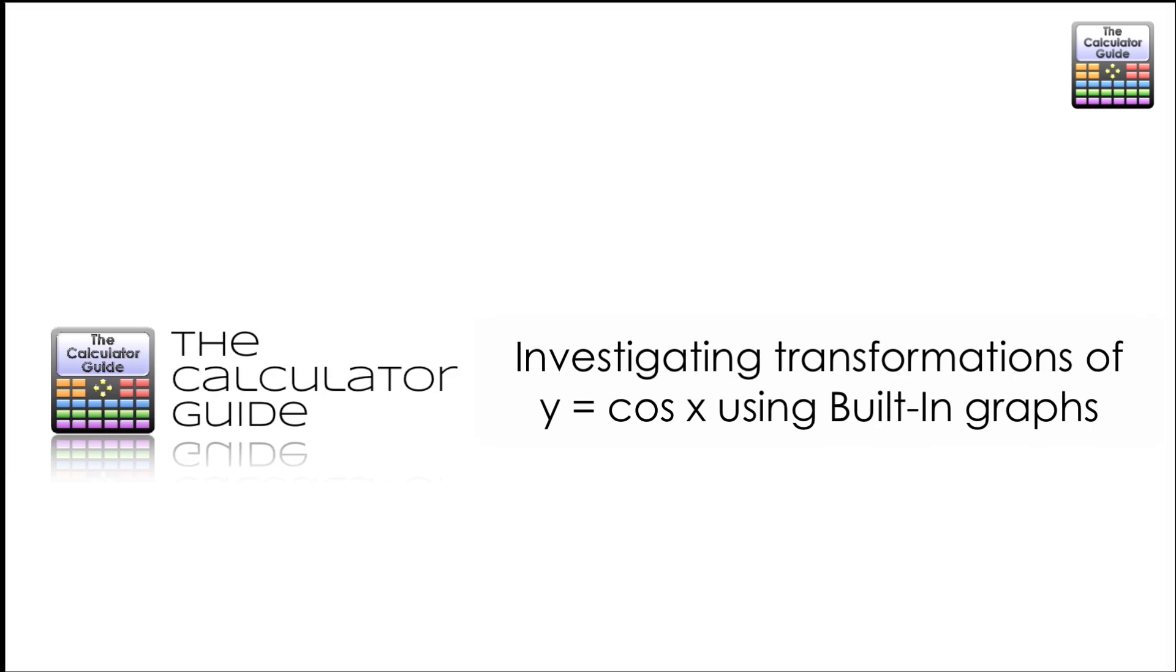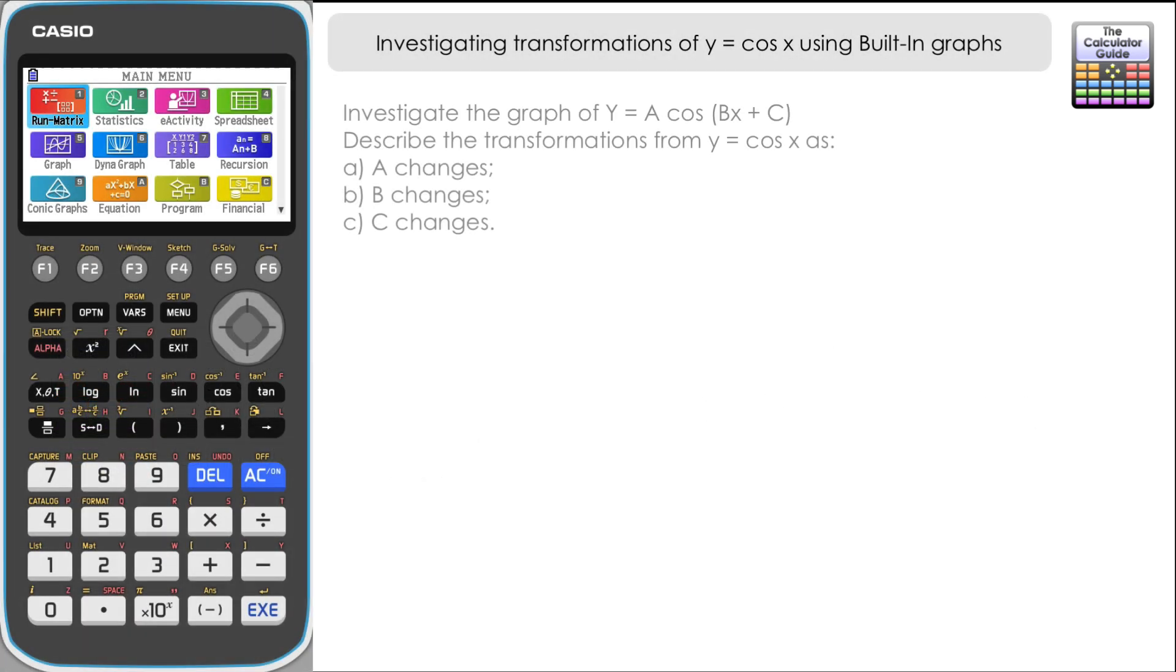Hello and welcome to the calculator guide video on investigating transformations of y equals cosine x using built-in graphs. We're going to investigate the graph of y equals a cosine bx plus c on a Casio FXCG50. This feature may be available on other Casio graphic calculators. We're going to describe the transformations from y equals cosine x as a changes, b changes, and c changes, where a, b, and c are variables that we can alter within the graph feature.